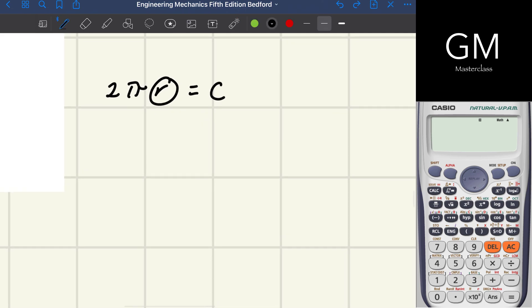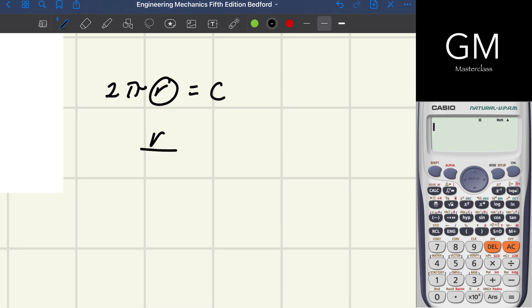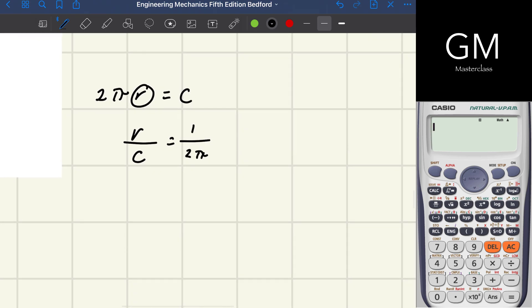We're going to write that down: R divided by C equals 1 divided by 2π. Now we're going to the calculator to compute this equation.